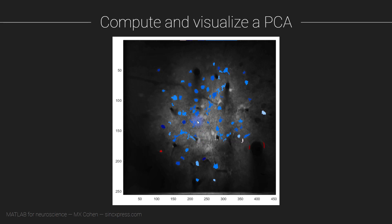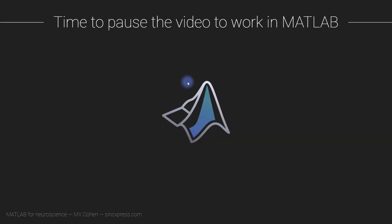But you can see it also missed quite a few cell bodies that we can see visually, and we have a couple of mislabeled artifacts that were identified as cells. Now is the time to pause the video, switch to MATLAB, and work through the partially completed MATLAB code. I'm now going to switch to MATLAB and talk you through my solution.